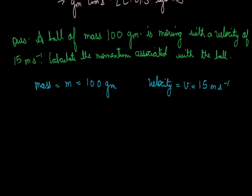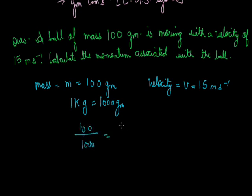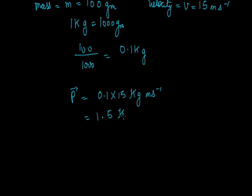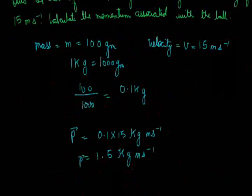Either they should be in CGS or in the SI system. So we can convert mass. We know 1 kg is equal to 1000 gram, and to change gram to kg, we divide 100 by 1000, which gives 0.1 kg. Now if we take mass and velocity, both are in the SI system. So momentum is 0.1 into 15 kg meter per second, which equals 1.5 kg meter per second. So this is the momentum of the ball, and this is how we can calculate the momentum of any particle.